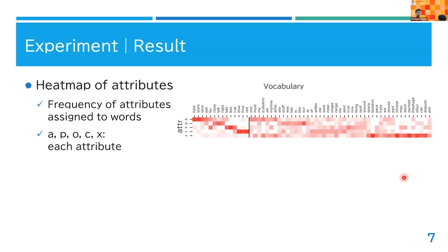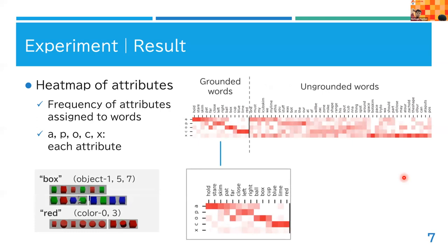When we focus on words linked to sensory information, I call those grounded words. Most grounded words are assigned appropriate attributes. For example, 'hold' or 'stare' is assigned to action categories, and 'blue' or 'red' is assigned to color categories.